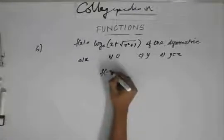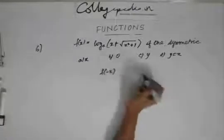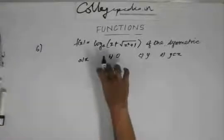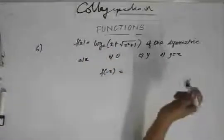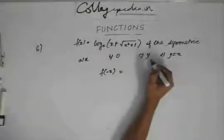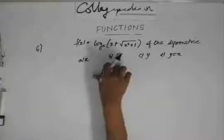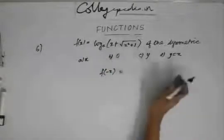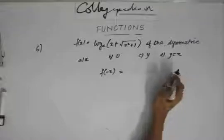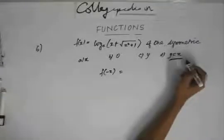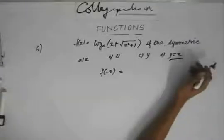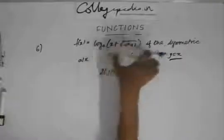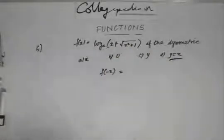Let's find out f(-x), because if f(-x) equals f(x) then the function is symmetric about the y-axis. If f(-x) equals minus f(x), then it is symmetric about the origin. To find out if it's symmetric about y = x, we need to find the inverse of this function — if the inverse equals the function itself, it is symmetric about y = x.